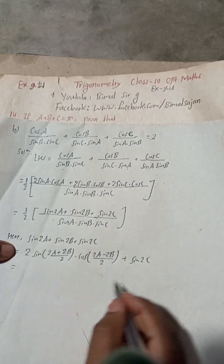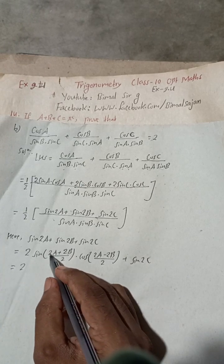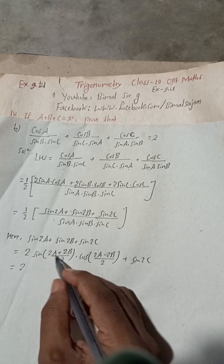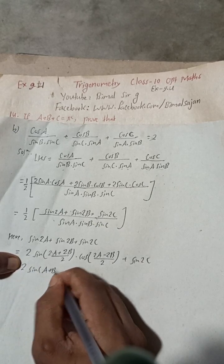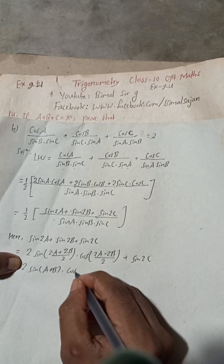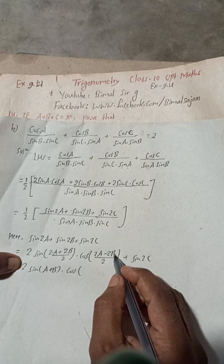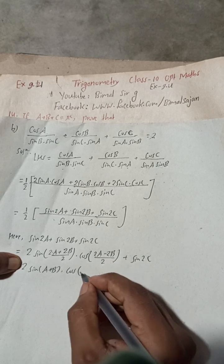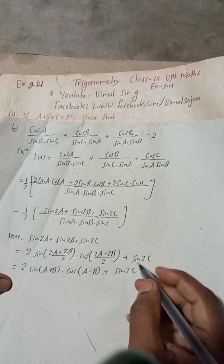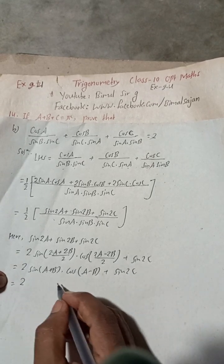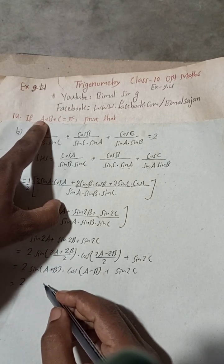Taking 2 common from the first two terms gives 2 sin(A+B) · cos(A−B), while the 2s inside cancel leaving (A+B) and (A−B). So this equals 2 · sin(A+B) · cos(A−B) + sin 2C.